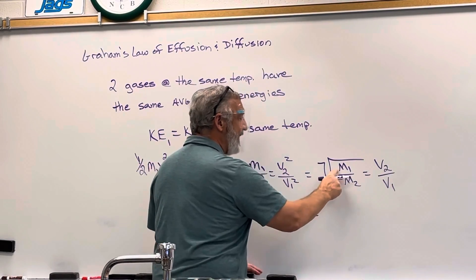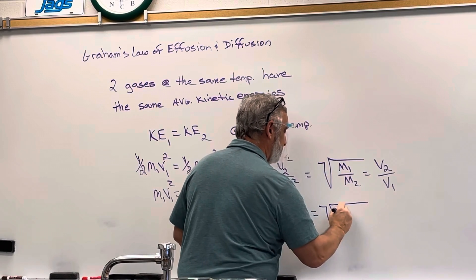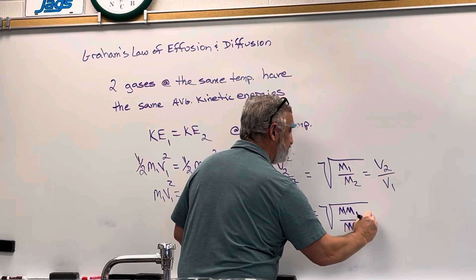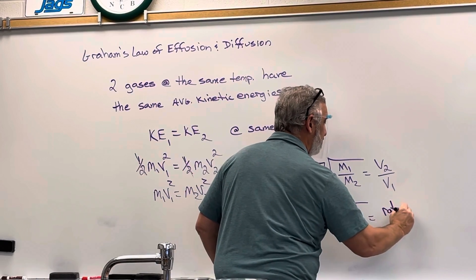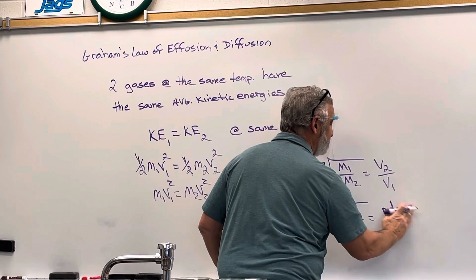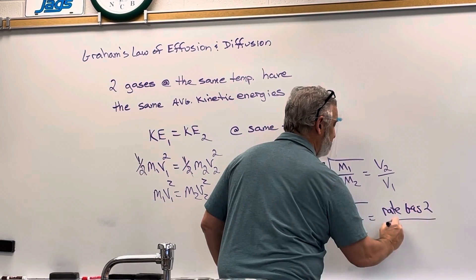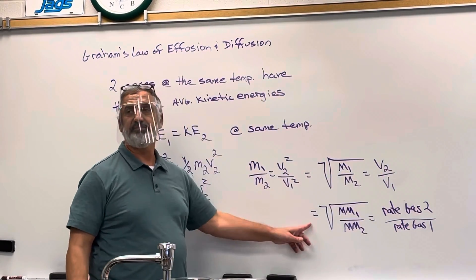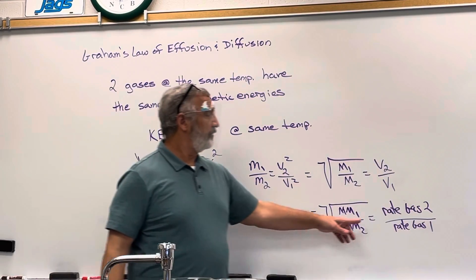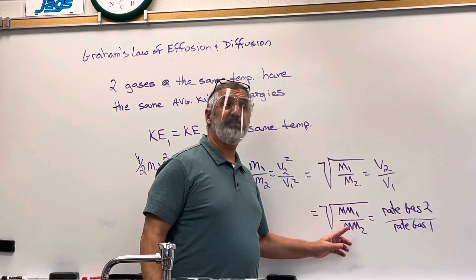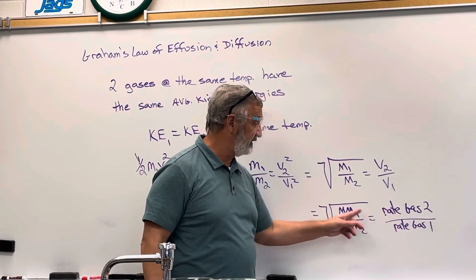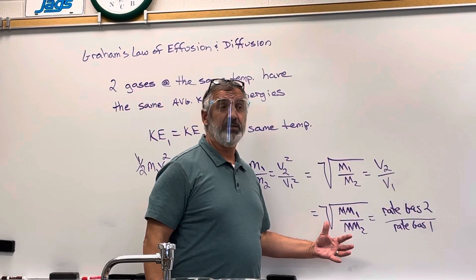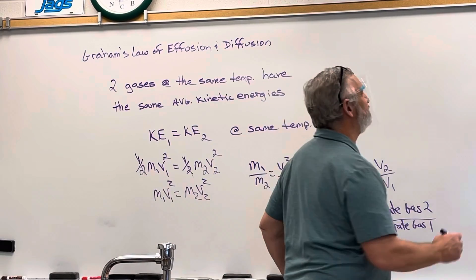So we can use the mass, we can say the molar mass of gas one divided by the molar mass of gas two is going to equal the rate of v2, the rate of gas two, versus the rate of diffusion of gas one. This is Graham's law right here. The rate at which the gases are going to spread out are inversely proportional. Notice there's a swap, gas one down here. So that makes it inversely proportional to the square root of the molar mass.